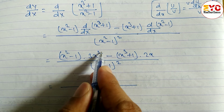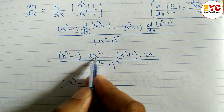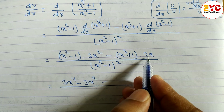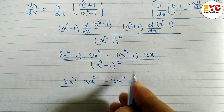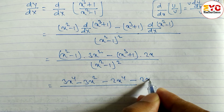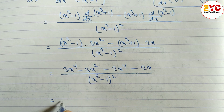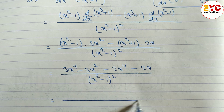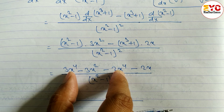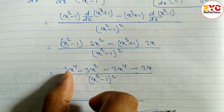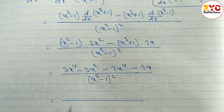Multiplying out: (x² - 1)(3x²) gives 3x⁴ - 3x², and (x³ + 1)(2x) gives 2x⁴ + 2x. So dy/dx equals (3x⁴ - 3x² - 2x⁴ - 2x) divided by (x² - 1)². Collecting like terms: 3x⁴ and 2x⁴ are like terms giving x⁴ combined.